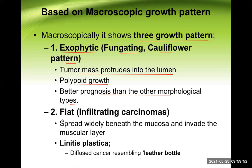The second is flat or infiltrating type of carcinoma. These spread widely beneath the mucosa and invade the muscular layer. We use the term linitis plastica for this because it resembles a leather bottle type of stomach. A leather bottle doesn't have much stretching capacity — the same concept here. The walls of the stomach are infiltrated by the malignant cells, becoming rather stiff and losing elasticity. This is known as linitis plastica or leather bottle stomach.